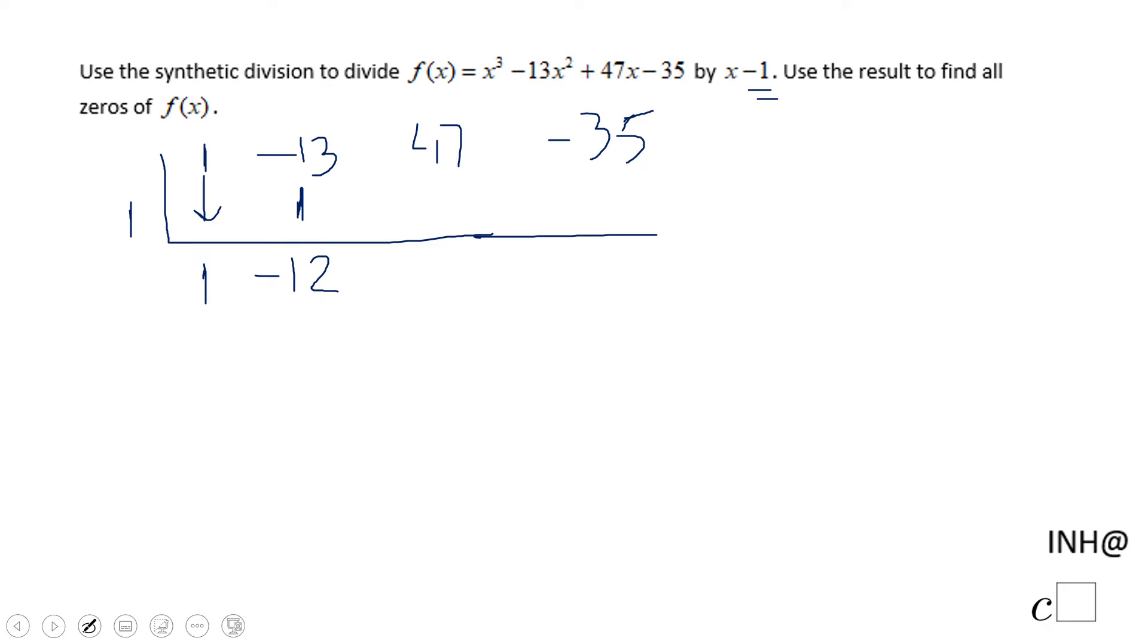1 times negative 12 is negative 12. If we add these we get positive 35. 1 times 35 is 35, and the remainder will be 0.